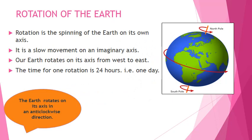Rotation of the Earth. Rotation is the spinning of the Earth on its own axis. It is a slow movement on an imaginary axis. Our Earth rotates on its axis from west to east. The time for one rotation is 24 hours, that is one day.